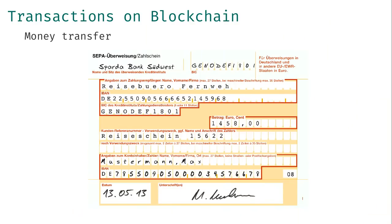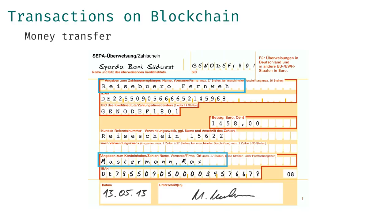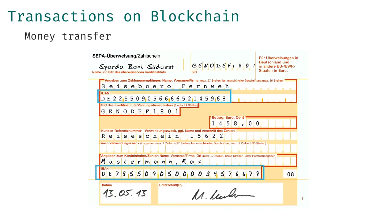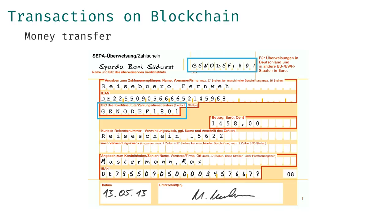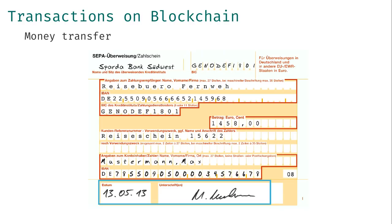This is a classic German bank transfer form. Before the times of online banking, this form was used to transfer money from one bank account to another. You had to write extremely clearly — it was horrible. You filled out this form, gave it to your bank, and they took care of everything else. You can see some fields: the names of sender and receiver, account numbers, the bank ID — in this case it's the same bank — the amount of money, the signature of the sender, and the date.